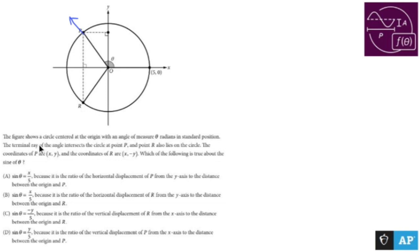The coordinates of R are (x, -y). Which of the following is true about the sine of theta? So let's label a few things. All right, your (x, y). Your (x, -y).